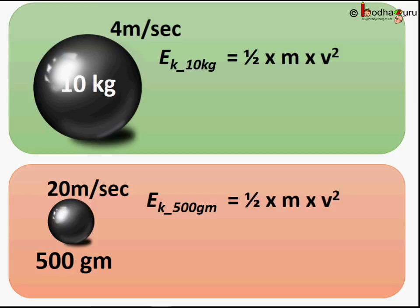Now, coming to the heavier ball, here m is equal to 10 kg and v is equal to 4 meter per second. So, E becomes equal to half multiplied by 10 multiplied by 4 square and this becomes equal to half of 10 is 5. So, 5 multiplied by 16 and this becomes equal to 80 joules.